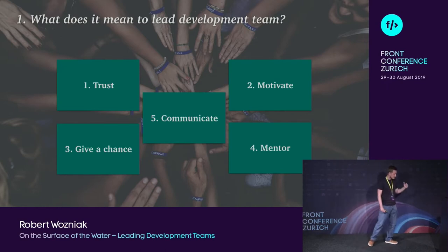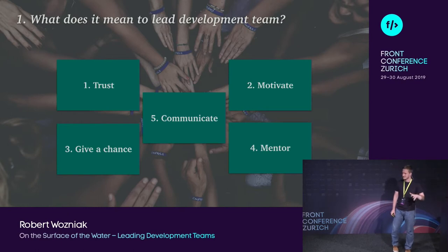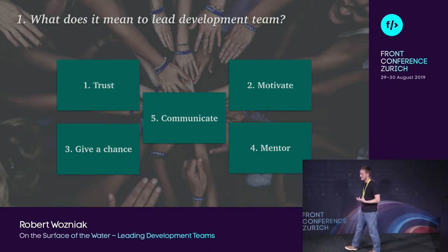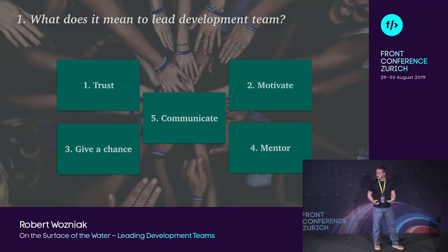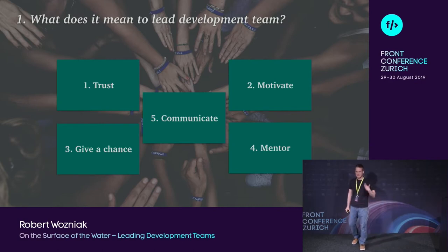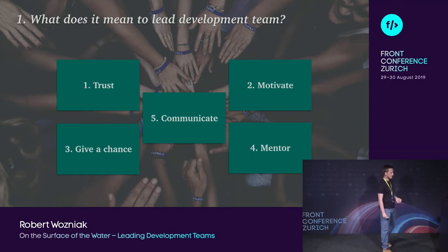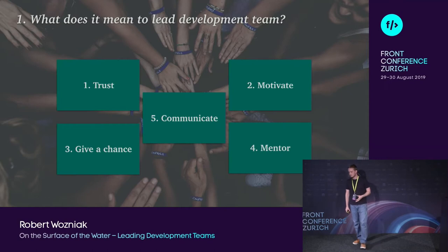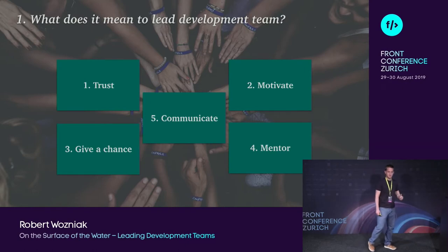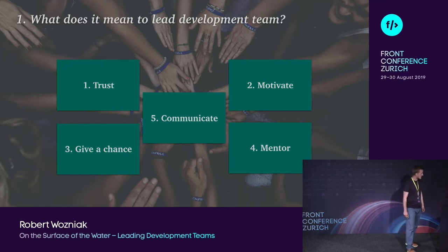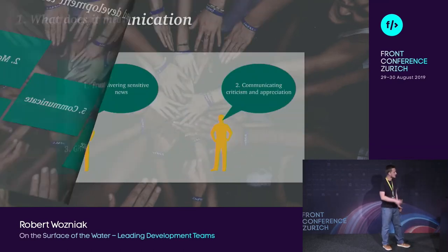The fourth point is mentor. Apart from giving a chance, you should act as a mentor — tell your team members what they've done wrong, what they can improve, be honest with them, and have an impact on their knowledge and career progression every day. The fifth and last point is communicate. If you are a lead, there is no place for dishonesty. Transparency and honesty should come first when leading the team every day.